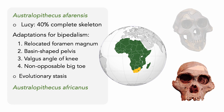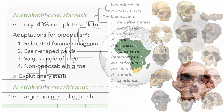Another highly successful species was Australopithecus africanus. Like afarensis, africanus also had long arms with curved fingers and shoulders suited for climbing trees, but with other adaptations for habitual bipedal locomotion. Africanus continued the evolutionary trend of increasing brain size and changes in dentition. Its teeth were smaller, and based on enamel wear, we suspect it had a broader diet than afarensis — not only eating fruits, but tougher foods as well.